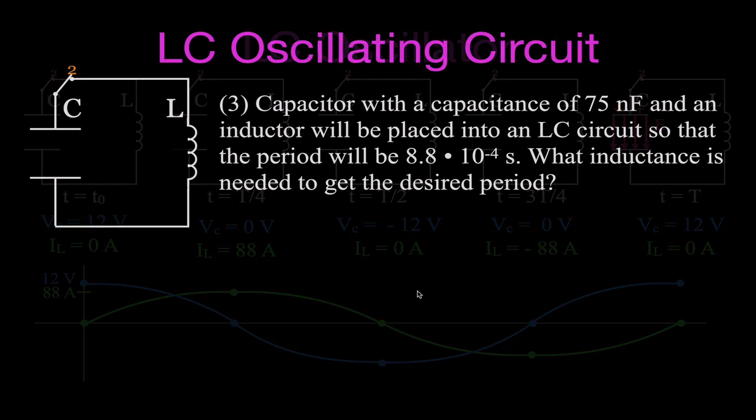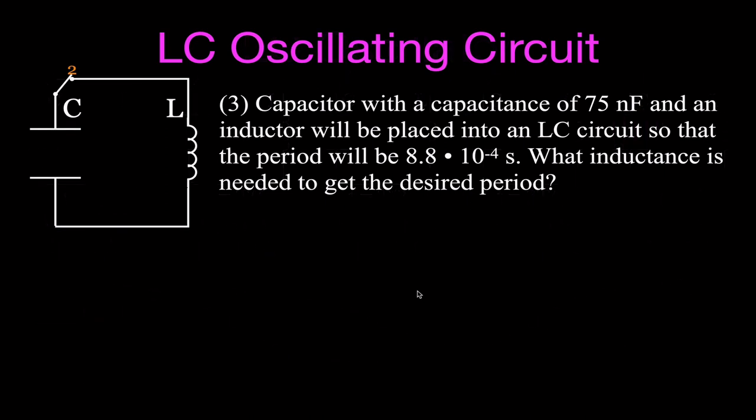For number three, we have a capacitor with a capacitance of 75 nanofarads, and we need to find the inductance required so that the period is 8.8×10⁻⁴ seconds. We use the same equation T = 2π√(LC) and solve for L. Squaring both sides eliminates the square root: T² = 4π²LC. Then dividing both sides by 4π²C isolates L, giving L = T² / (4π²C).